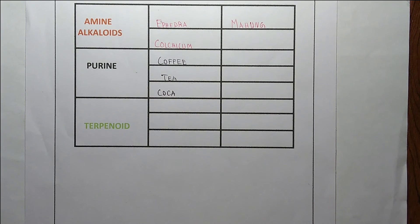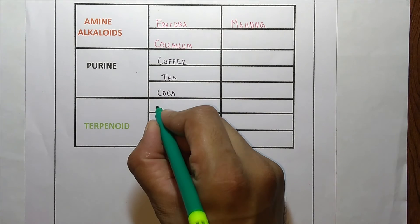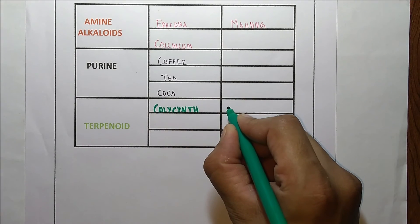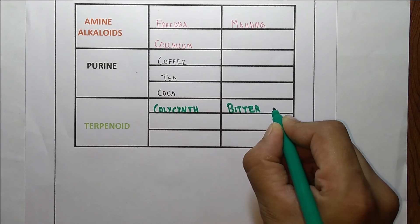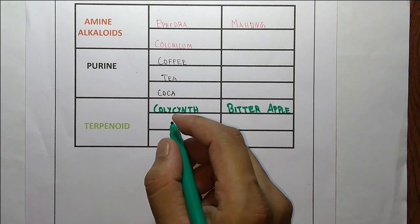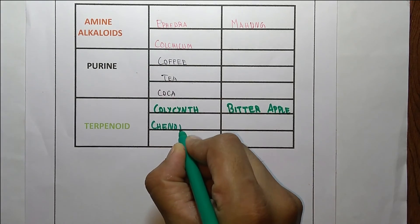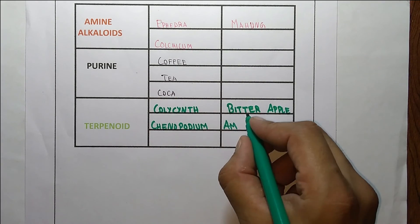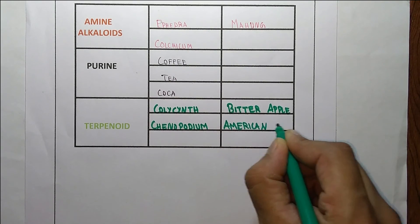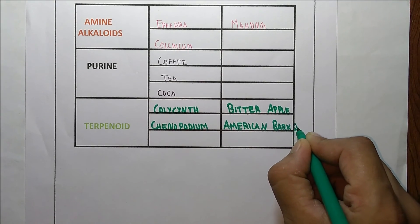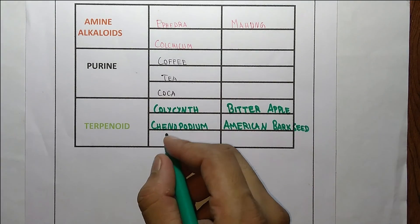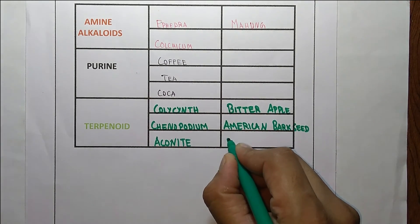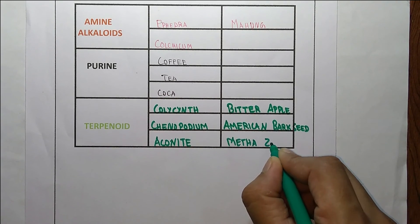Last but not least: colocynth — its synonym is 'bitter apple.' Next is kinopodium — its synonym is 'American bark seed.' And echinite — its synonym is 'mehta zahar' (spelled Z-A-H-A-R).